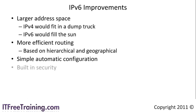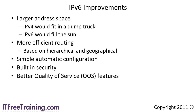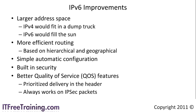IP version 6 offers built-in security using IPSec. IP version 4 can use IPSec but there is no native support. IP version 6 can use IPSec without the need for significant configuration and infrastructure. Having native support ensures that all hosts can use encrypted transmissions. IP version 6 also offers greater quality of service features. In IP version 4 these features were limited to particular ports. With IP version 6, you can place priority information inside the header, meaning that IPSec packets can also use quality of service features.